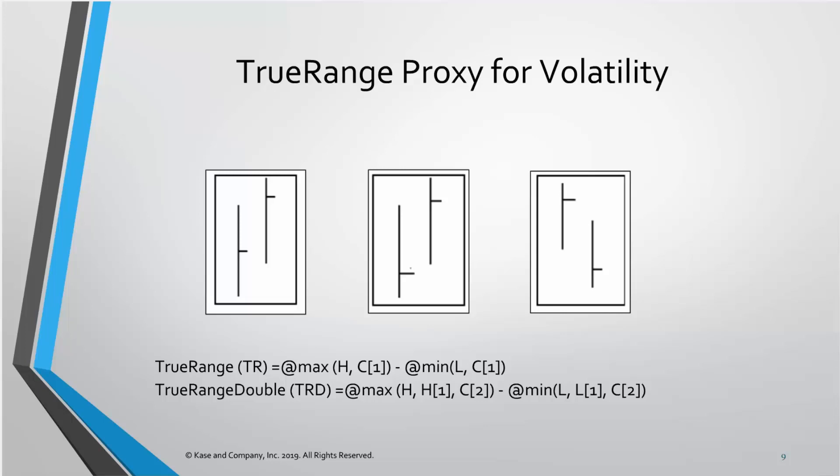We actually use something called true range double, the formula of which is at the bottom of the screen. It's basically the maximum distance of trading between three bars rather than two, and the reason we do that is it gives a slightly smoother distribution when looking at true range. It's very similar to the Wells Wilder true range — just a small variation that Cynthia came up with when she started designing CASE Statware back in the late 80s and early 90s.